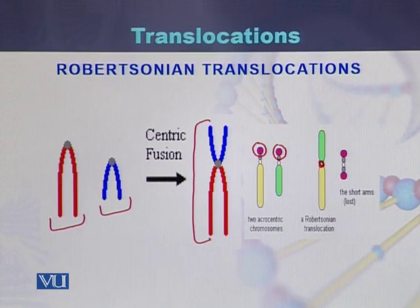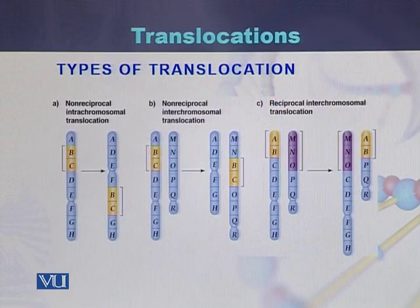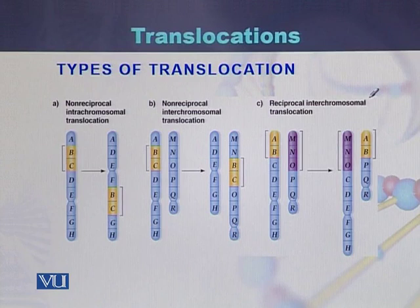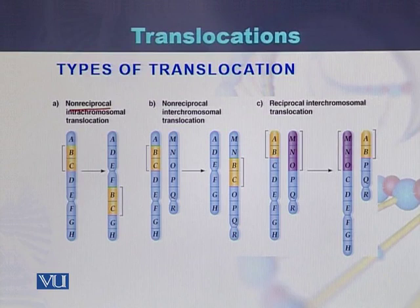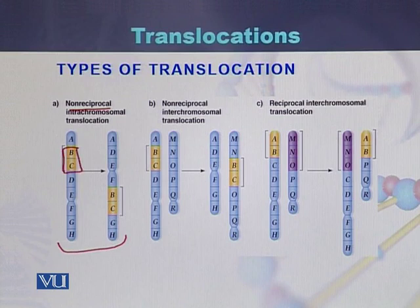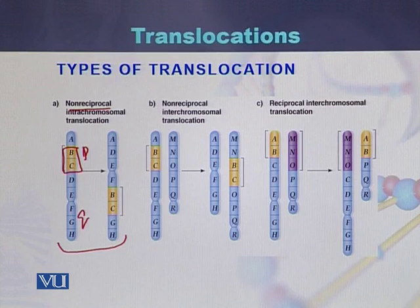Types of translocation based on the centromere include non-reciprocal and reciprocal translocation. In case of non-reciprocal intra-chromosomal translocation, the change of fragments occurs within a single chromosome. Originally a fragment was present on the P arm, and as a result of translocation it has joined on the Q arm.